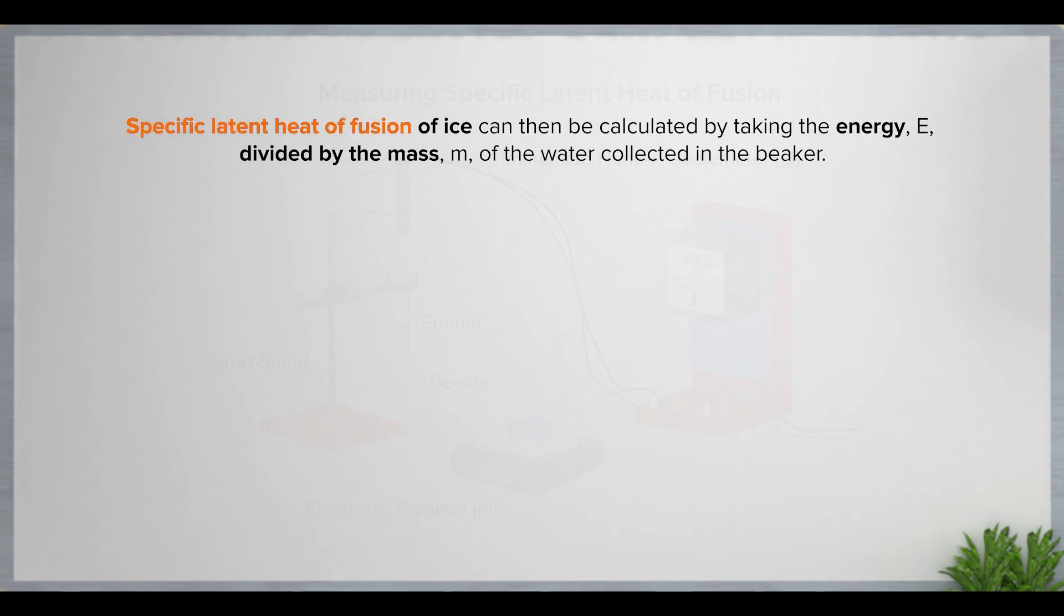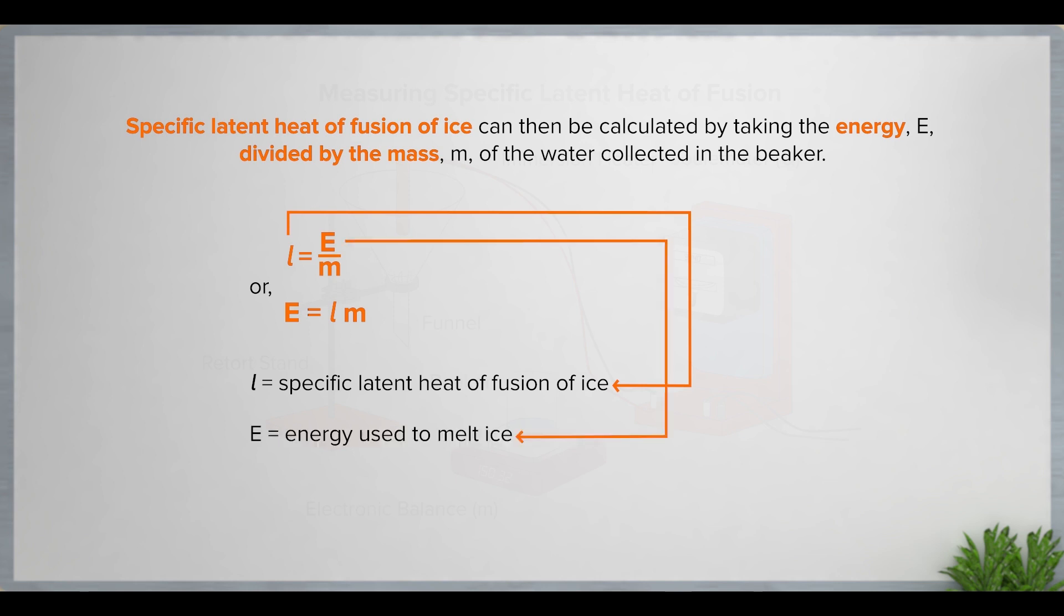Specific latent heat of fusion of ice can then be calculated by taking the energy, E, divided by the mass, M, of the water collected in the beaker. Mathematically, the equation is as such: L equals to E over M, or E equals to LM, where L denotes specific latent heat of fusion, E denotes energy, while M denotes mass.